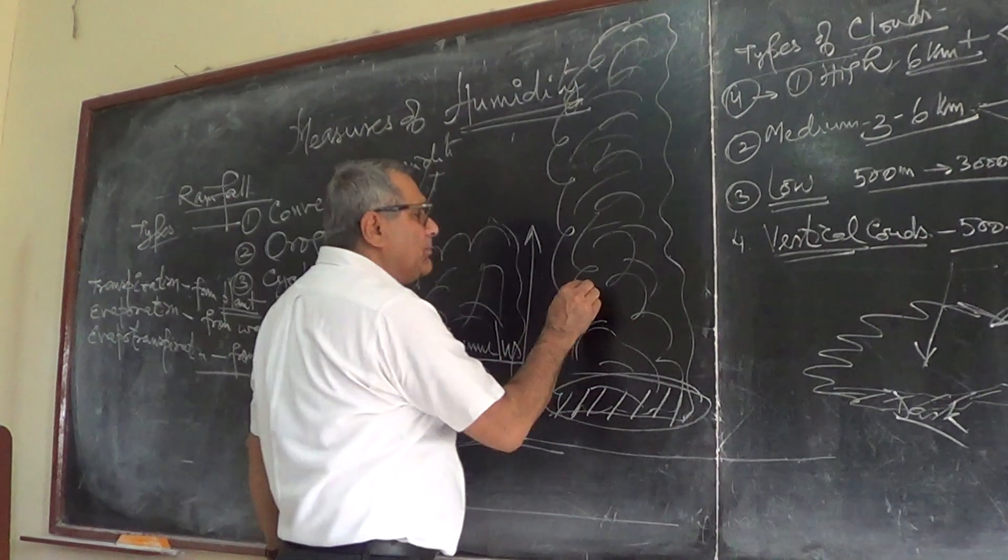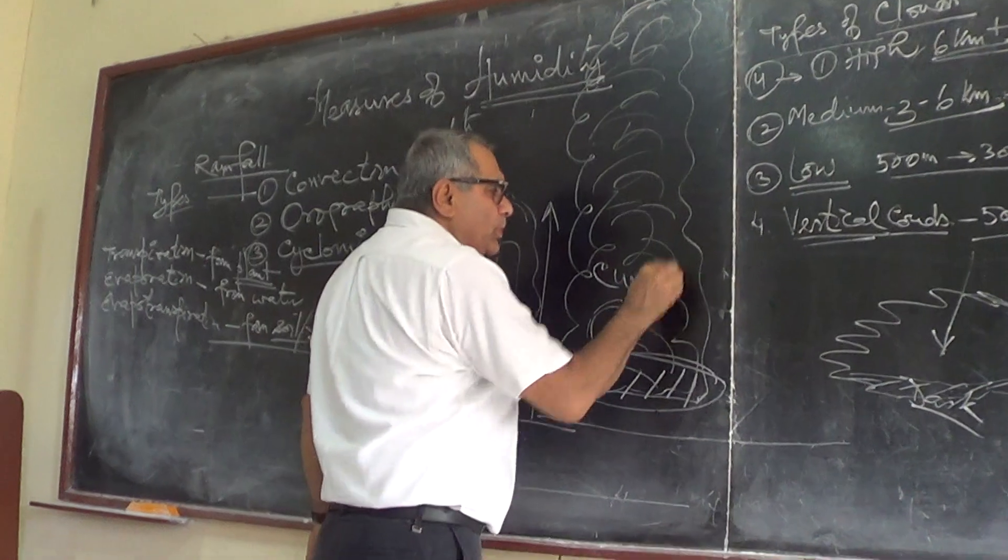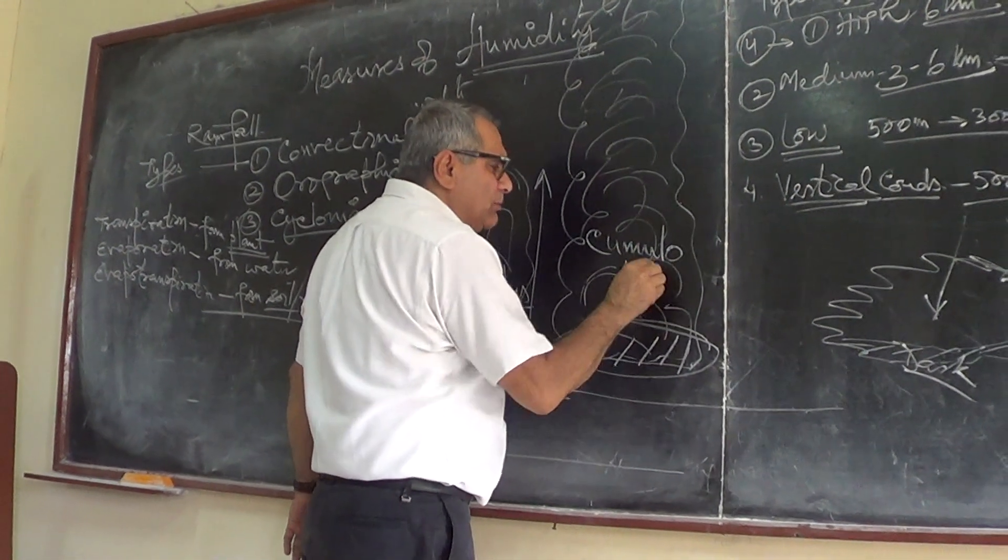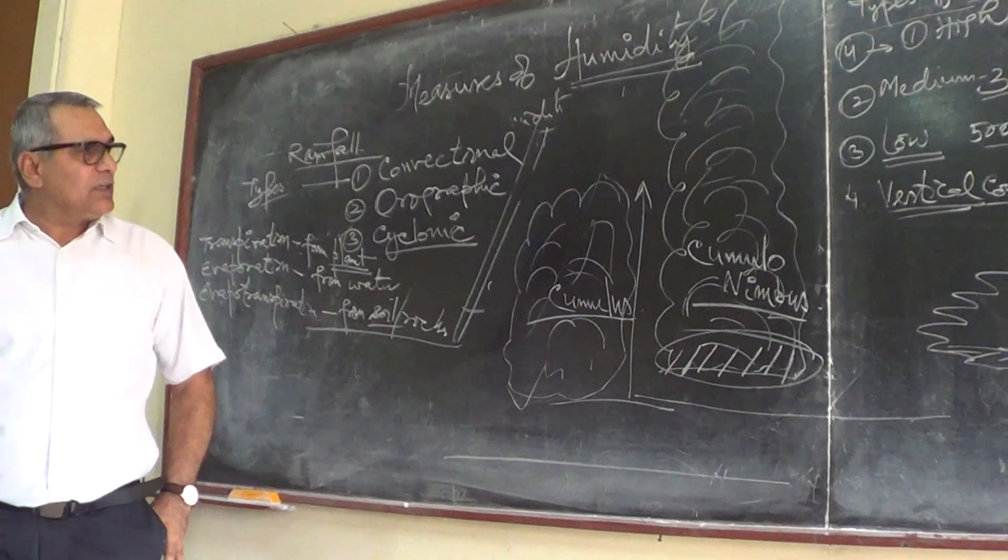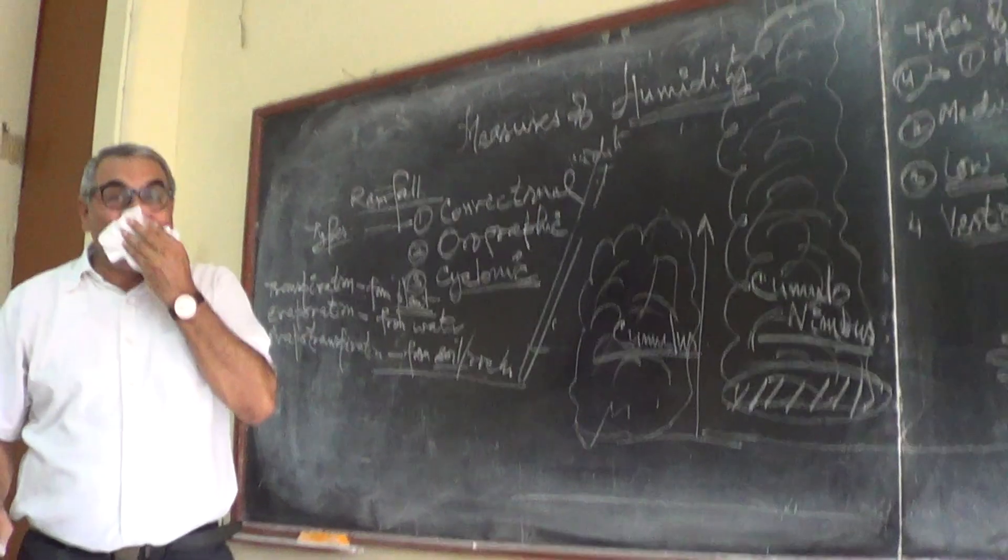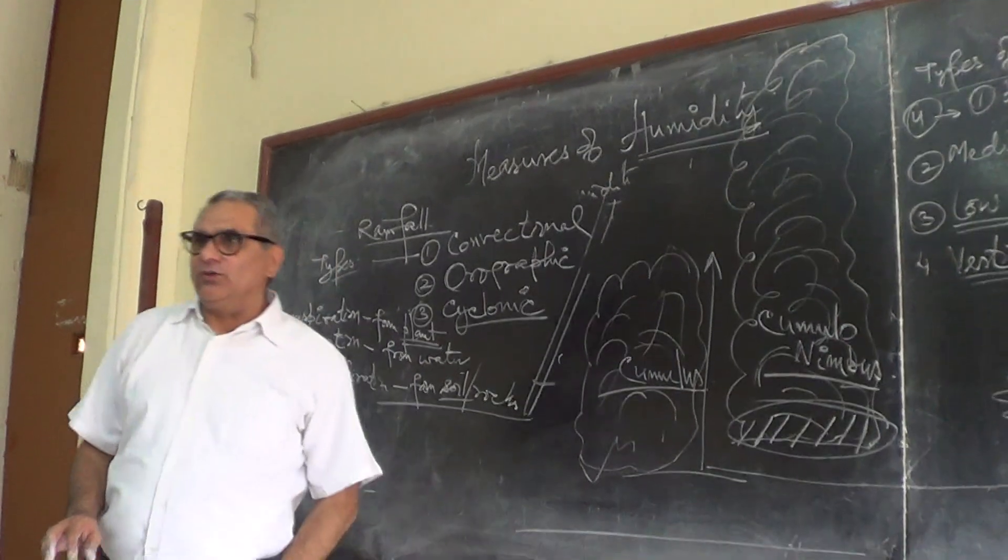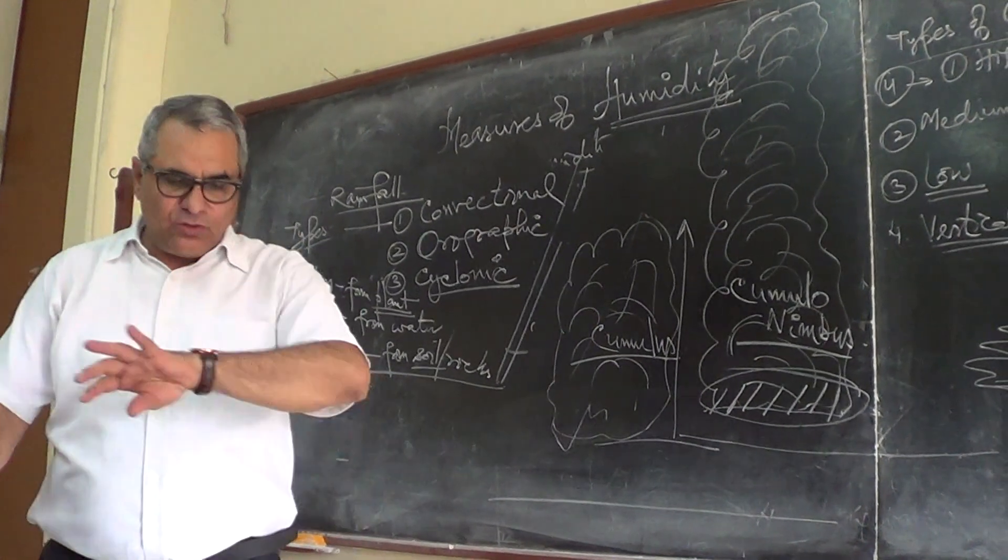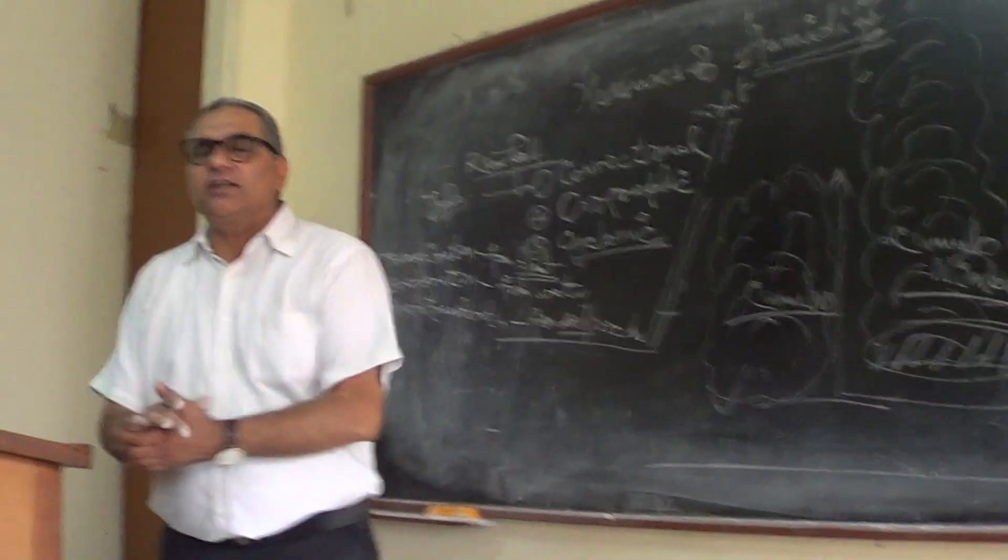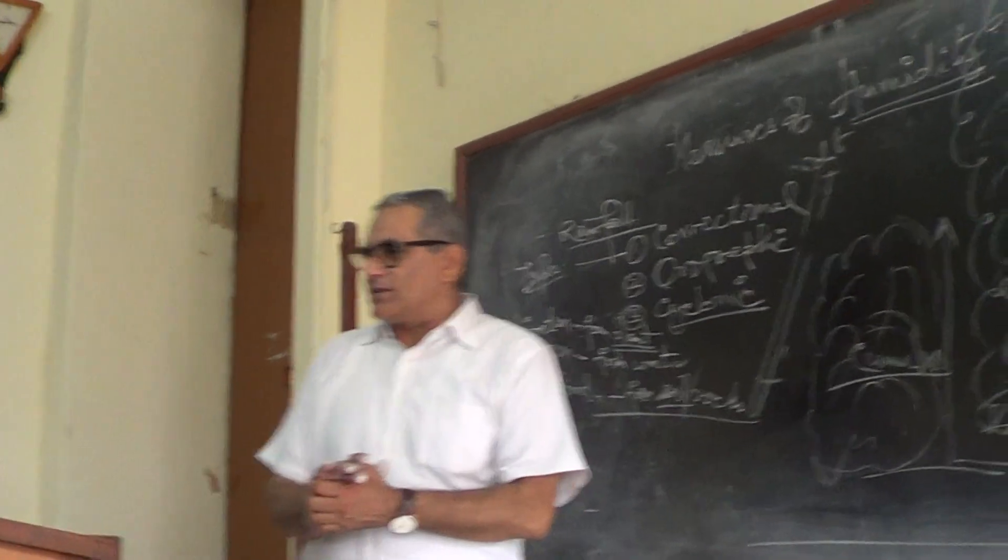So this is cumulonimbus cloud. Cumulonimbus, this is the most important cloud we have during cyclone, cyclonic turbulence. So these are all different types of the clouds. And I think we should stop it here only. The time is over. So thank you very much for today's class. Thank you.